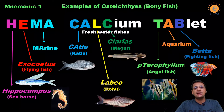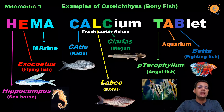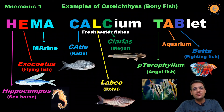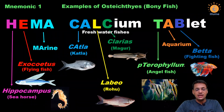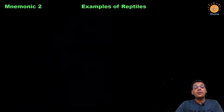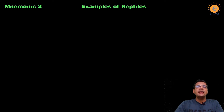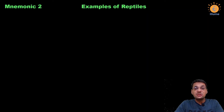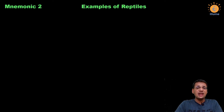To summarize: Catla, Labeo, and Clarias are freshwater bony fishes; Hippocampus and Exocoetus are marine bony fishes. That is how you remember the examples of Osteichthyes. Now the next mnemonic helps us remember all the examples of reptiles given in NCERT — strictly as per the NCERT book, not adding or leaving any example.